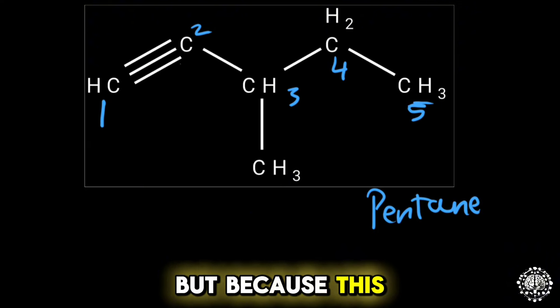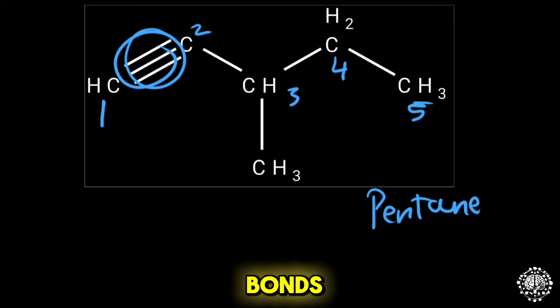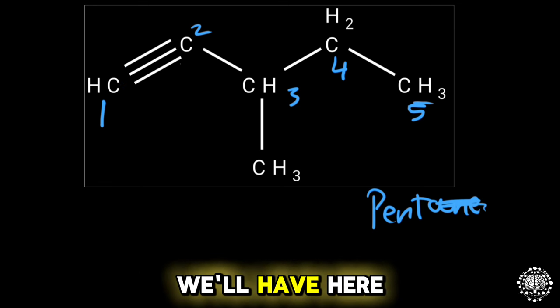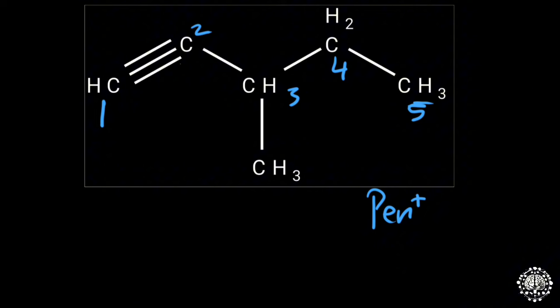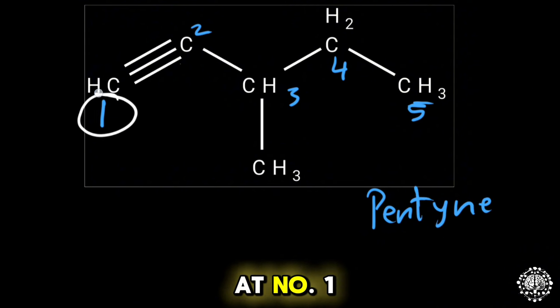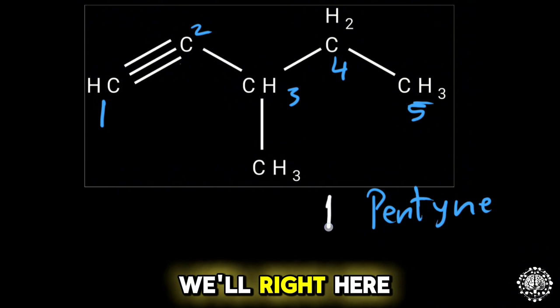But because this here has three bonds, it means that this is an alkyne. Instead of pentane, we will have here pentyne. Now where is the bond? The bond is at number one. This means that we will write here 1-pentyne.